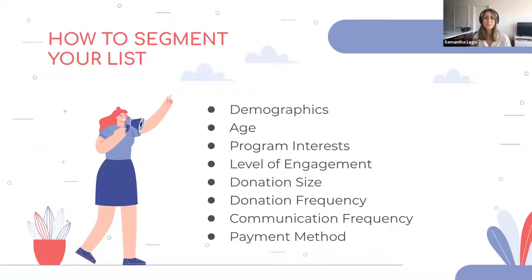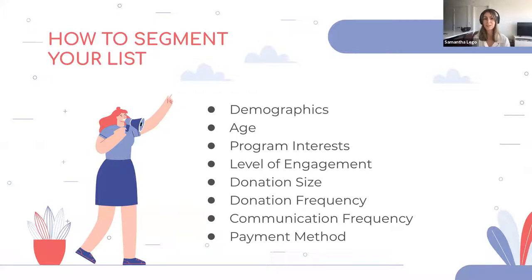To segment your list, start by breaking your contact list into smaller groups based on similarities or shared characteristics — demographics, age, level of engagement, whatever feels right for you. For example, you can create a segment based on program interests, where certain donors may only be interested in specific programs you run. You can also segment by level of engagement — is this donor recurring, retained, first-time, or lapsed? Each of those segments will have a different style of communication. You can also segment based on donation method: check, credit card, debit, even Bitcoin.